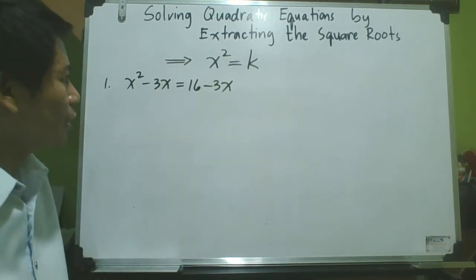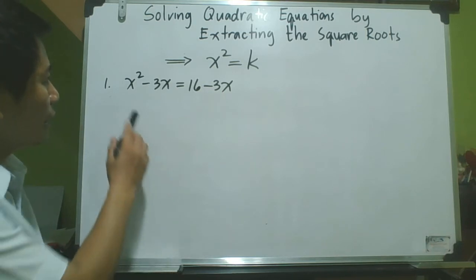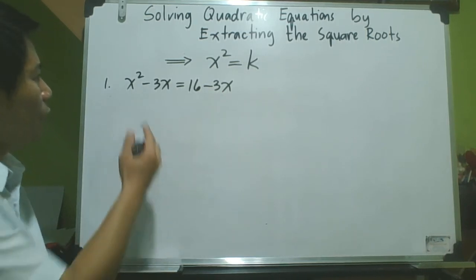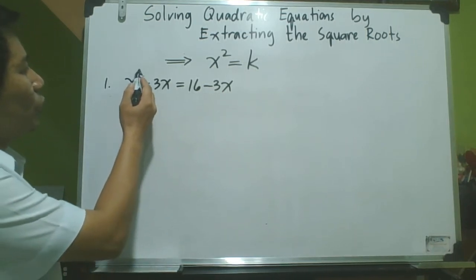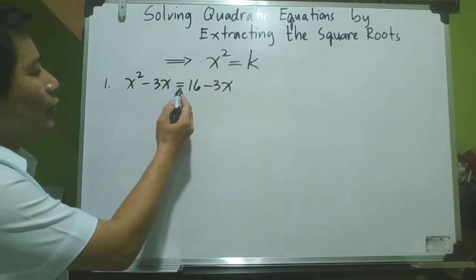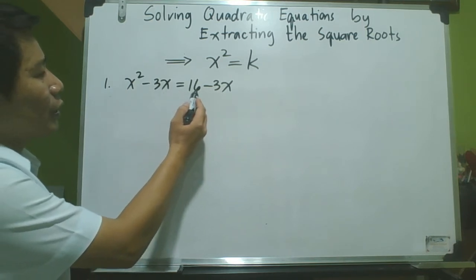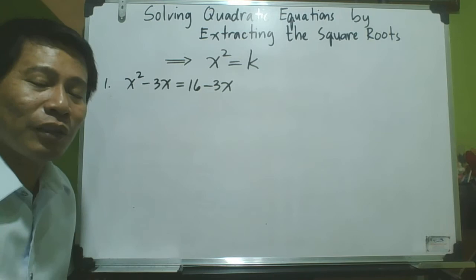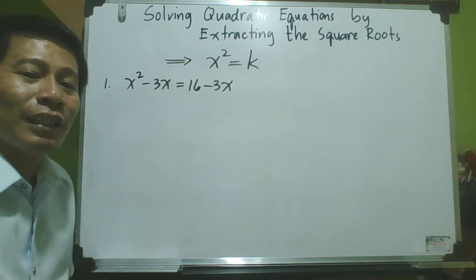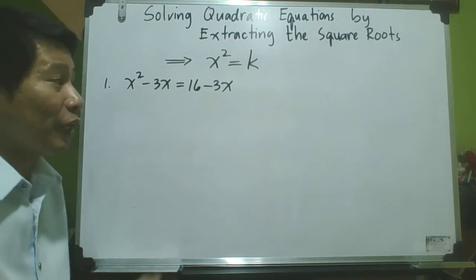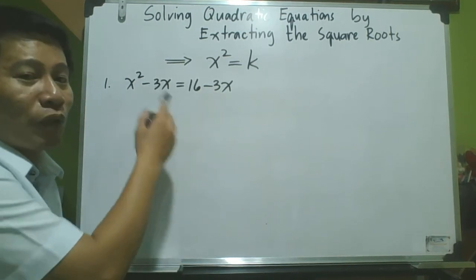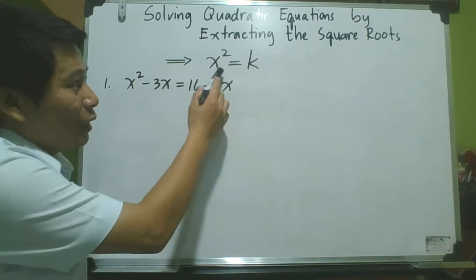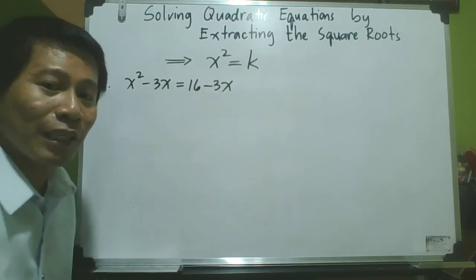Now, let us consider this equation: x squared minus 3x is equal to 16 minus 3x. The question is, can we write or transform this in the form x squared equals k?